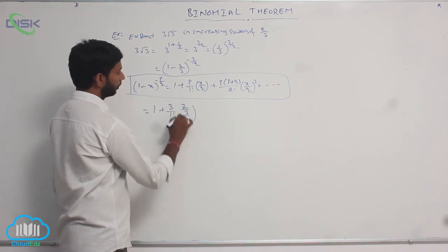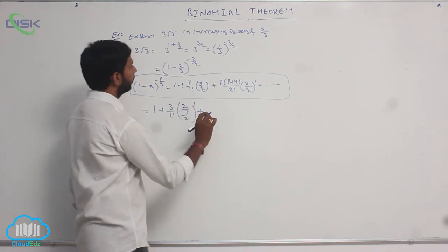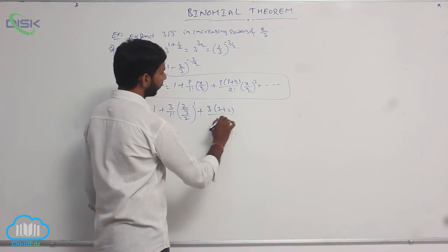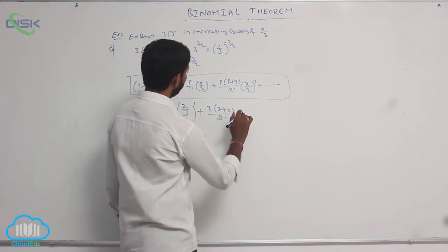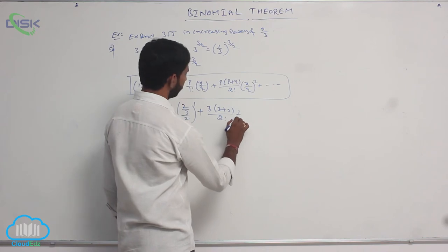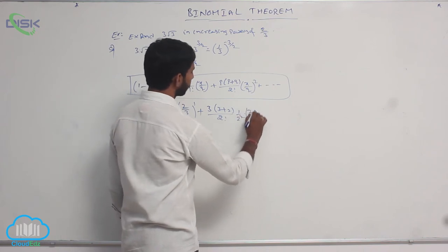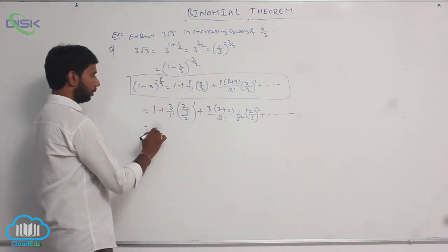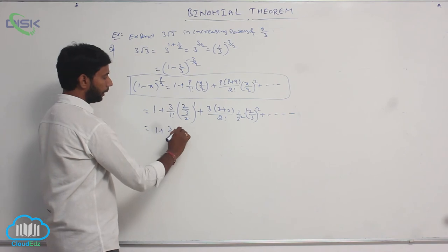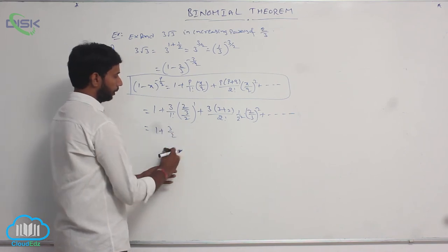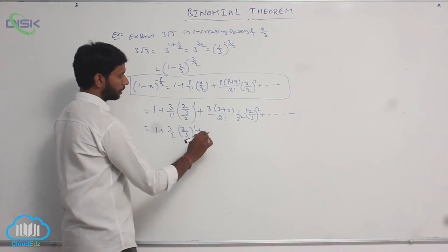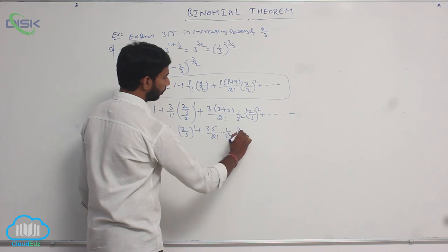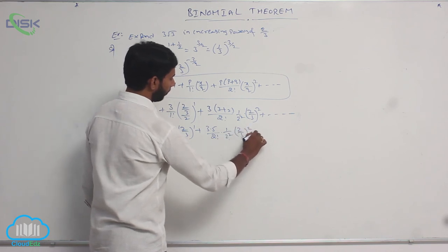Substituting p = 3, q = 2, and x = 2/3: we get 1 plus 3/(1 factorial) times (2/3) by 2, plus 3 times 5/(2 factorial) times (1/2) squared times (2/3) squared plus and so on.